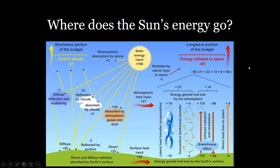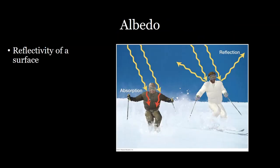And so we can think about the amount of energy that's being reflected versus absorbed and we can put a term to that and quantify that. And that's what we call albedo. So albedo is the term that we use for the reflectivity of a surface. So a surface with high albedo, such as a white surface like this skier on the right, is very reflective.